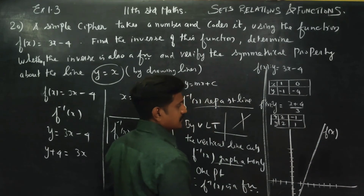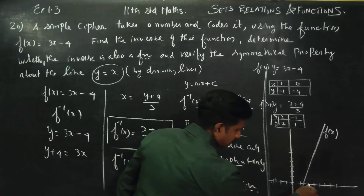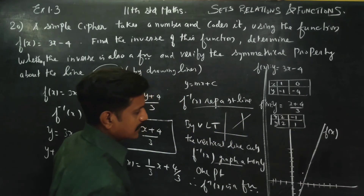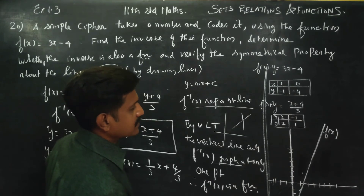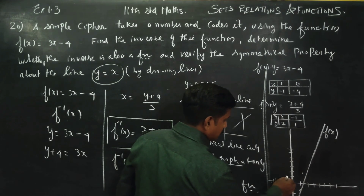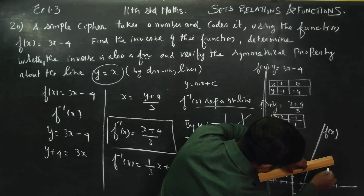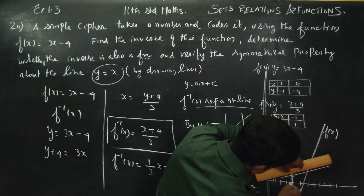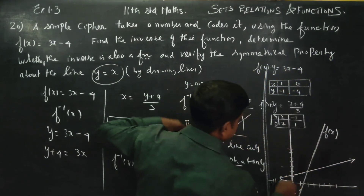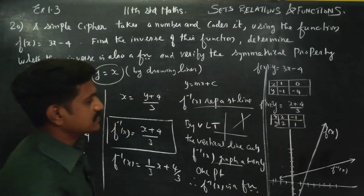Now substitute values into f inverse of x. Plot the point (2, 2) and the point (−1, 1). Join these points to draw a straight line. This is my f inverse of x.